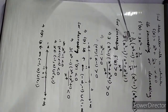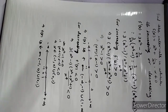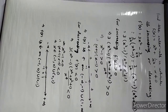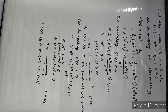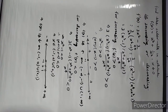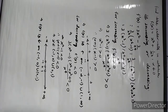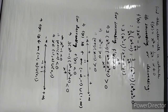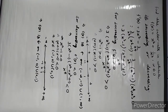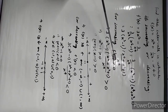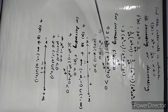Taking 3/x⁴ as common, we get 3/x⁴ into (x⁶ - 1). Now the factors of x⁶ - 1: we write it as (x²)³ - 1³, and using the a³ - b³ formula, in one bracket (x² - 1) and in another bracket (x⁴ + x² + 1). So f'(x) = 3(x² - 1)(x⁴ + x² + 1) / x⁴.